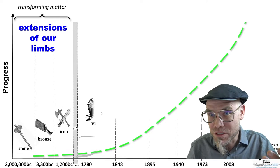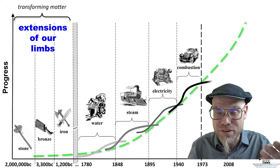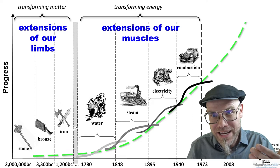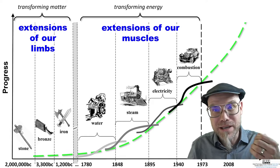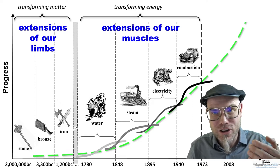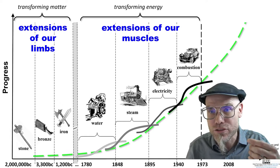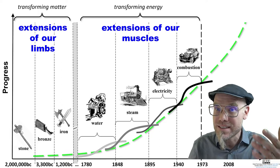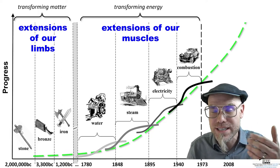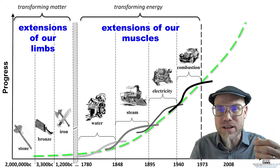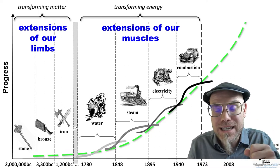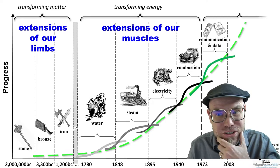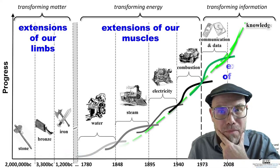Then, in what we usually refer to as the Industrial Revolution, we learned how to dominate energy. These technologies helped us to extend our muscles through water power, mills, steam engines, electricity, and the combustion engine. And what we're dealing with right now is our extensions of our minds.